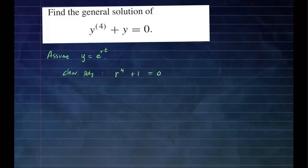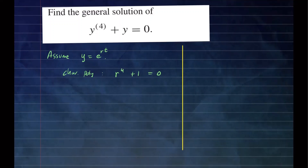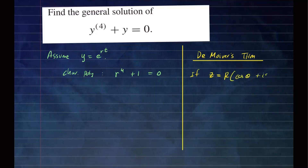The way we're going to do this is by using a very famous formula called De Moivre's theorem. Let me give you a quick recap. De Moivre's theorem tells us that if you have a complex number Z, that can be written as a plus bi, or in polar form as r cosine θ plus i sine θ. And we know from Euler's identity, this is r e to the iθ.